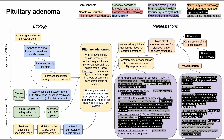ACTH deficiency, or adrenal insufficiency, causes weight loss, weakness, hypotension, chronic hyponatremia, and hypoglycemia — notably the opposite of what you'd see in Cushing's disease. Lastly, ADH deficiency is essentially central diabetes insipidus, and the patient may have polyuria and polydipsia — they'll be urinating and drinking a lot.